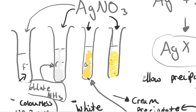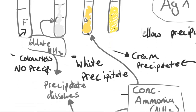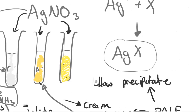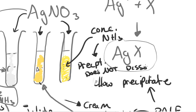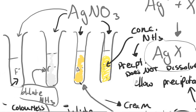For the iodide, the silver iodide precipitate is more stubborn. If we add concentrated ammonia, NH3, to it, the precipitate does not dissolve. This distinction helps confirm what halide is present, and this extra ammonia test really helps confirm what we suspected from the initial precipitate color observation.